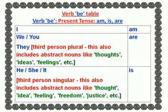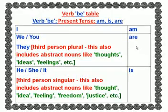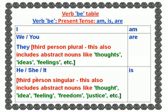Observe the verb 'be' table. The present tense forms of 'be' are: I am; we are; you are; they are. So with third-person plural we use 'are,' and third-person plural can also include abstract nouns like thoughts, ideas, feelings. He is; she is; it is — with third-person singular we use 'is.'